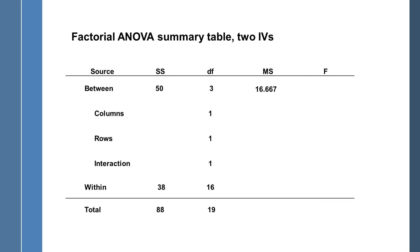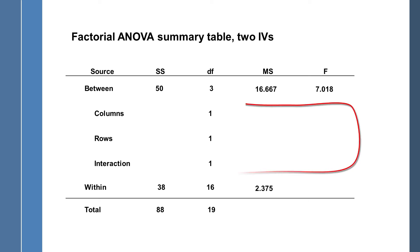Moving to the right-hand side of the table, we calculate the mean squares. Mean square is simply sum of squares divided by its degrees of freedom across that row. So 50 divided by 3 gives 16.667. For within: 38 divided by 16 gives 2.375. The F-ratio is the signal-to-noise ratio: 16.667 divided by 2.375 gives 7.018. We still need to compute the columns, rows, and interaction sum of squares.